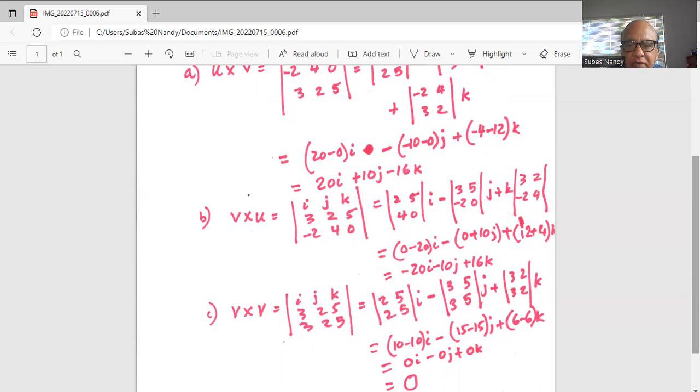So, 2 times 5 is 10, minus 10, 2 times 5 across, then minus 10, and 3 times 5, 15, minus 15j, plus 3 times 2, minus 3 times 2, 6, minus 6. So, everything is 0. So, the answer for v cross v is 0.